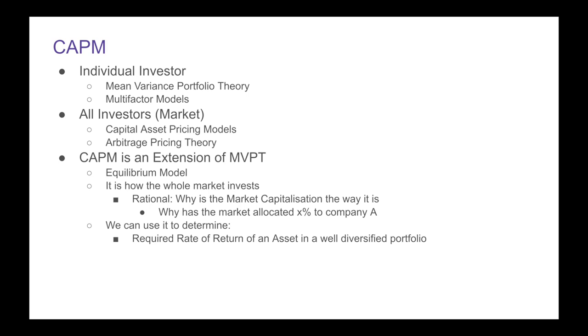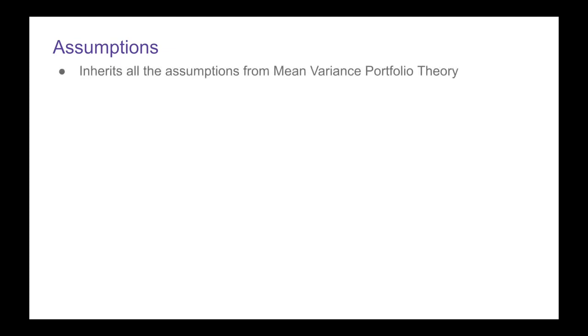CAPM is very academic, and we're going to be looking at some of the criticisms later. The reason I say it's very academic is because it has a whole bunch of assumptions, which really limits its practical use. But with these assumptions we can build academic theory around it. This is also the reasoning behind passive investing — if you are a passive investor, you'll find this very interesting. If you're an active investor, you're going to be thinking this is so dumb. Because CAPM inherits all the assumptions from mean variance portfolio theory — we're not going to be looking at taxes or transaction fees, and those of you working in finance know how important those things are.